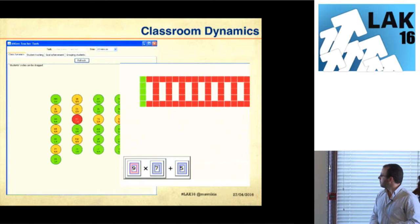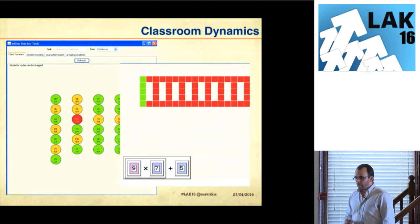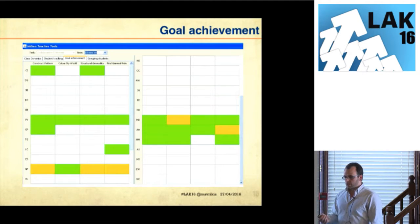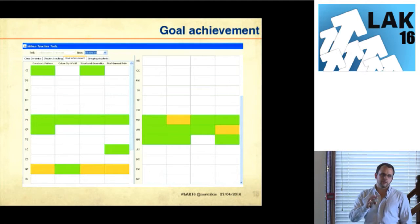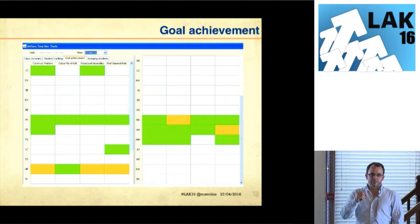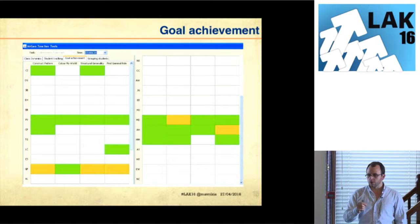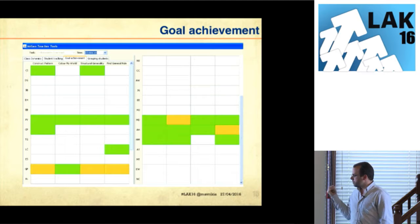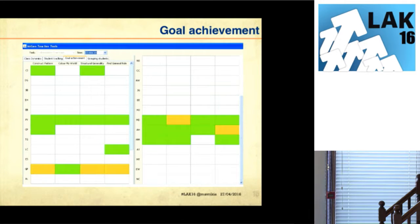Another visualization is what we refer to as the Goal Achievement tool. We instrumented the environment to have specific goals within the task, and the system detects whether students are achieving those goals. It shows them in this visualization as green if they have achieved one of these goals — every column represents one goal, for example 'construct a pattern.'